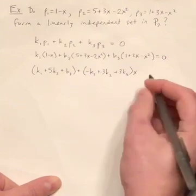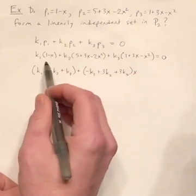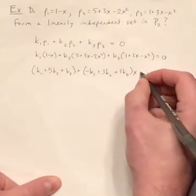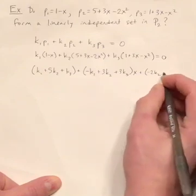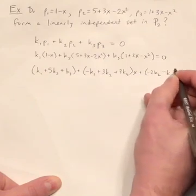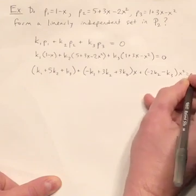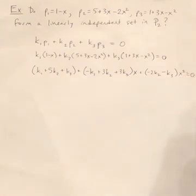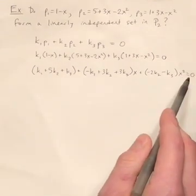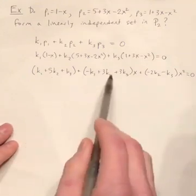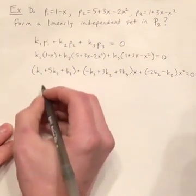And then let's do the same thing for the X squareds. I don't have one here, but I do have negative 2K2 and minus K3 for the X squared coefficients. Now it's pretty easy to see that if I want that to equal zero, then each one of these coefficients must equal zero.